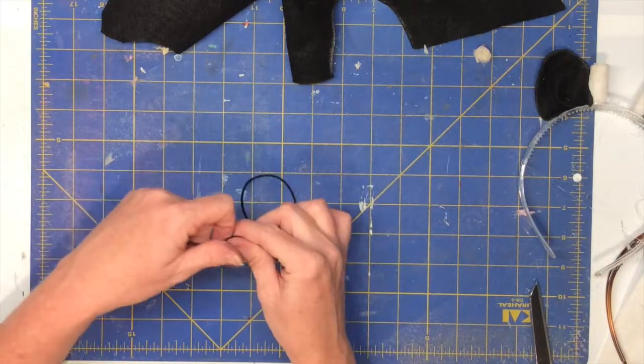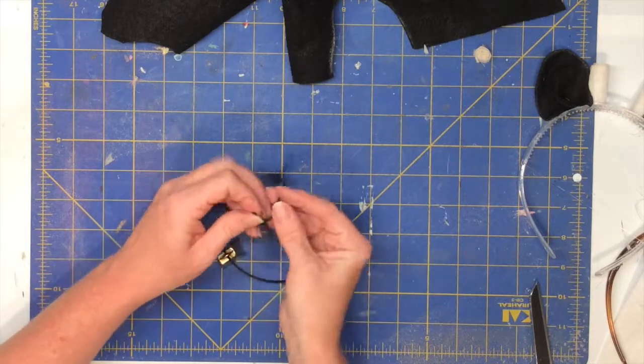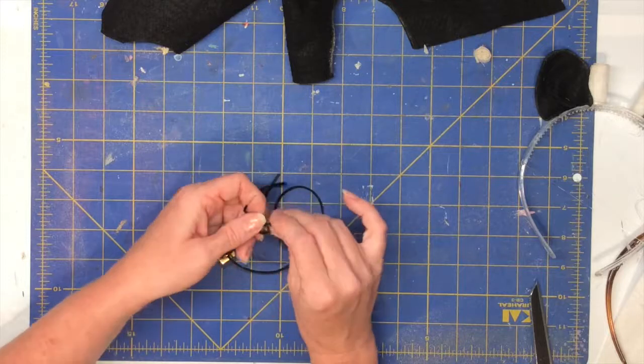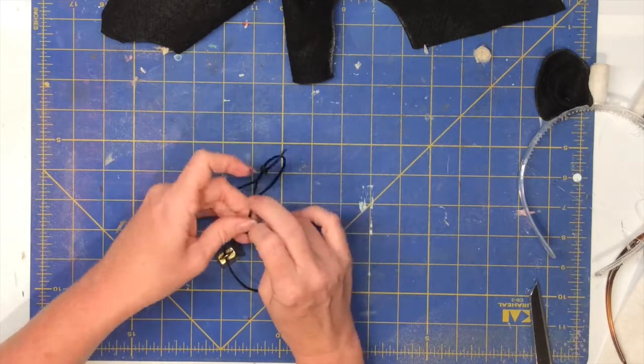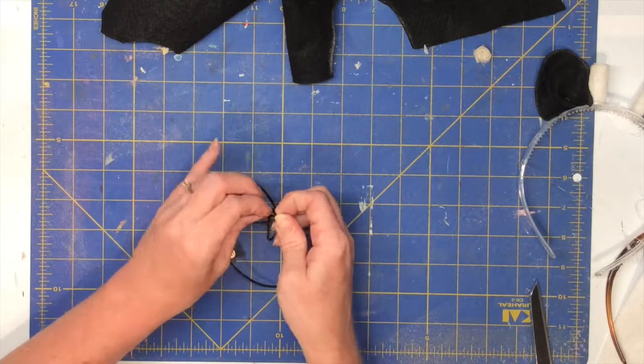Then you're going to do the same with the other string on the other side. You're going to tie a square knot around the string. So that's right over left and then left over right, but you're doing it around the other string.